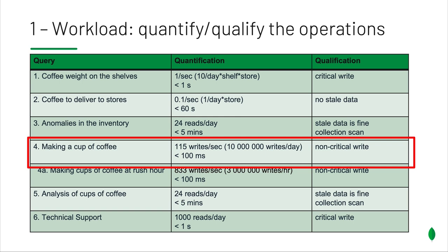Probably the most important query — which many of you would have guessed — is the one that generates the most traffic: sending a write event for every single cup of coffee we're making. One thing to notice here is that this is a non-critical write because the only thing we're going to be doing with that data is some analysis. Even if we lose one or two writes because of a network failure, it's not going to affect us that much. So we could label those as non-critical writes, meaning the coffee machine doesn't have to have an acknowledgement that the write will be protected forever. It's important to really understand that as you're doing your initial design — these decisions may help you a lot.